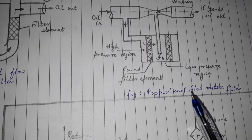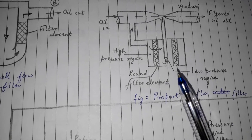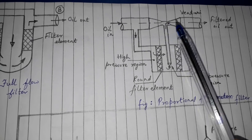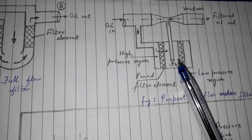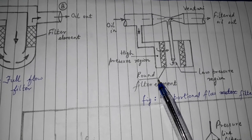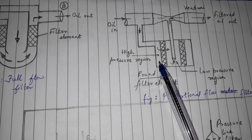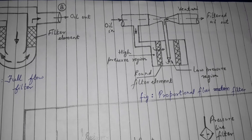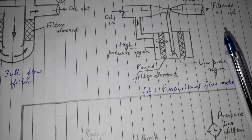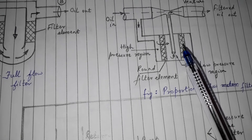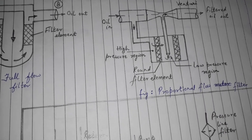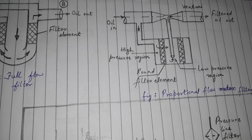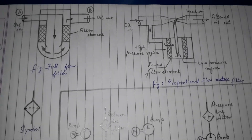In a proportional flow filter, the main oil line passes through a venturi, which creates a localized low pressure region. As you can see, the filter is round — inside it is a low pressure region and outside is a high pressure region. This pressure difference across the filter element causes a proportional quantity of oil to pass through the filter element.